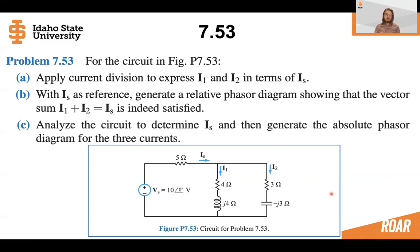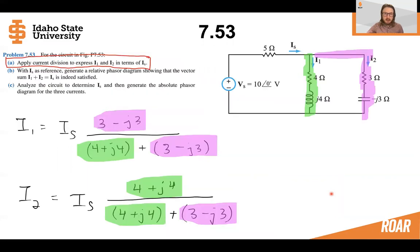And then finally, we will actually use our knowledge of the circuit below to calculate IS in phasor form, and we will draw a phasor diagram that shows the absolute phasor diagram for all three of these currents. So let's get started.